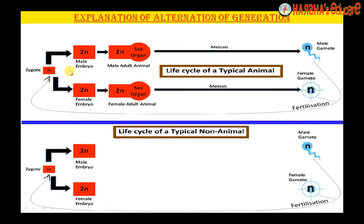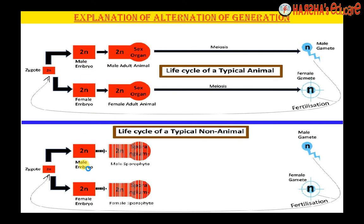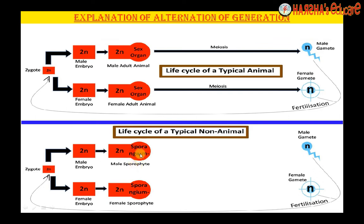But there are certain complexities when we come to the non-animal type. In the non-animal type, when the embryo or thallus develops further, the next level is called a sporophyte. The embryo always develops into a sporophyte — even if it is a thallus, we merge those levels and call it a sporophyte. Now, why is it called a sporophyte? Because this organism at this level is destined to produce special structures called spores.